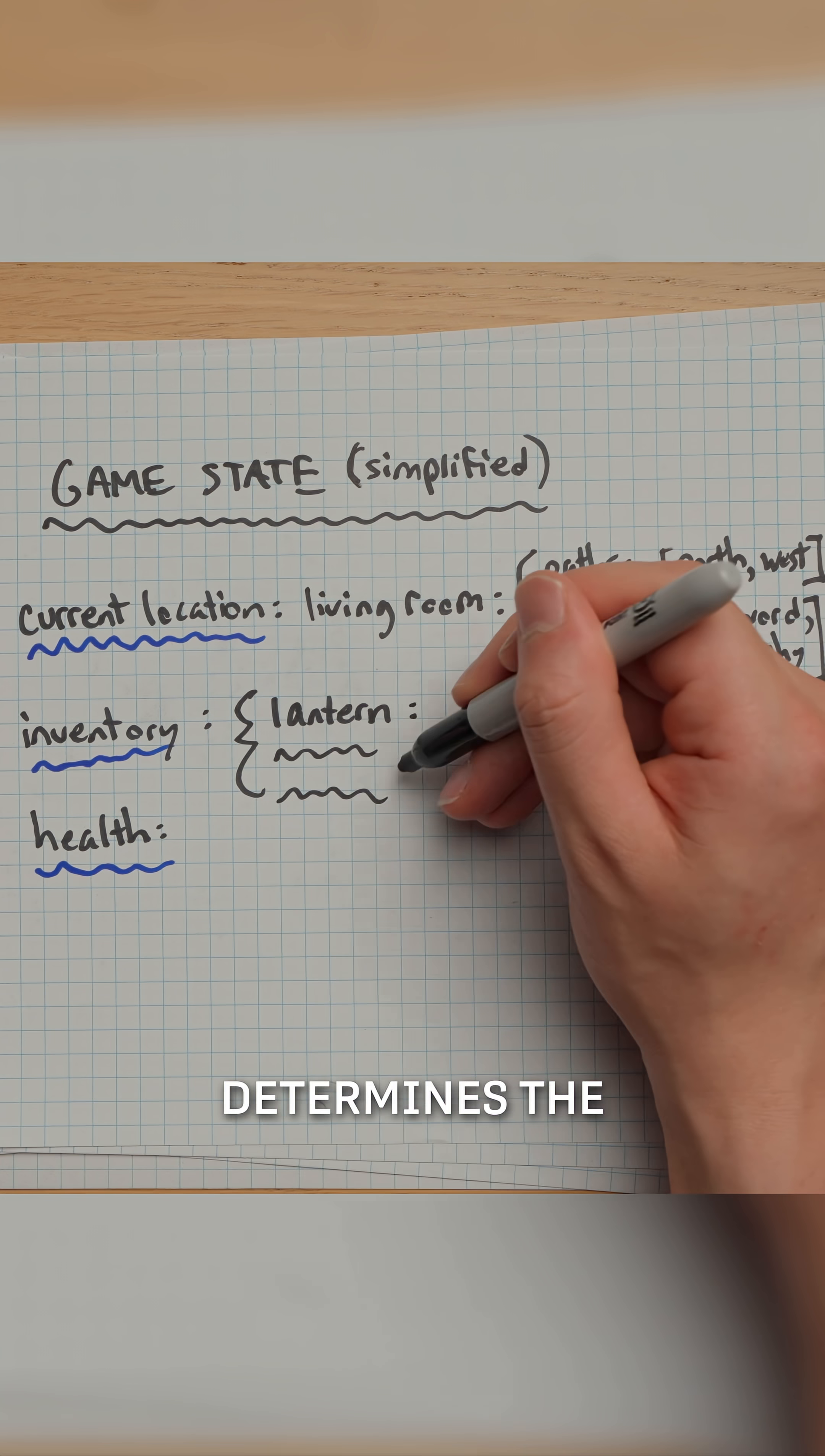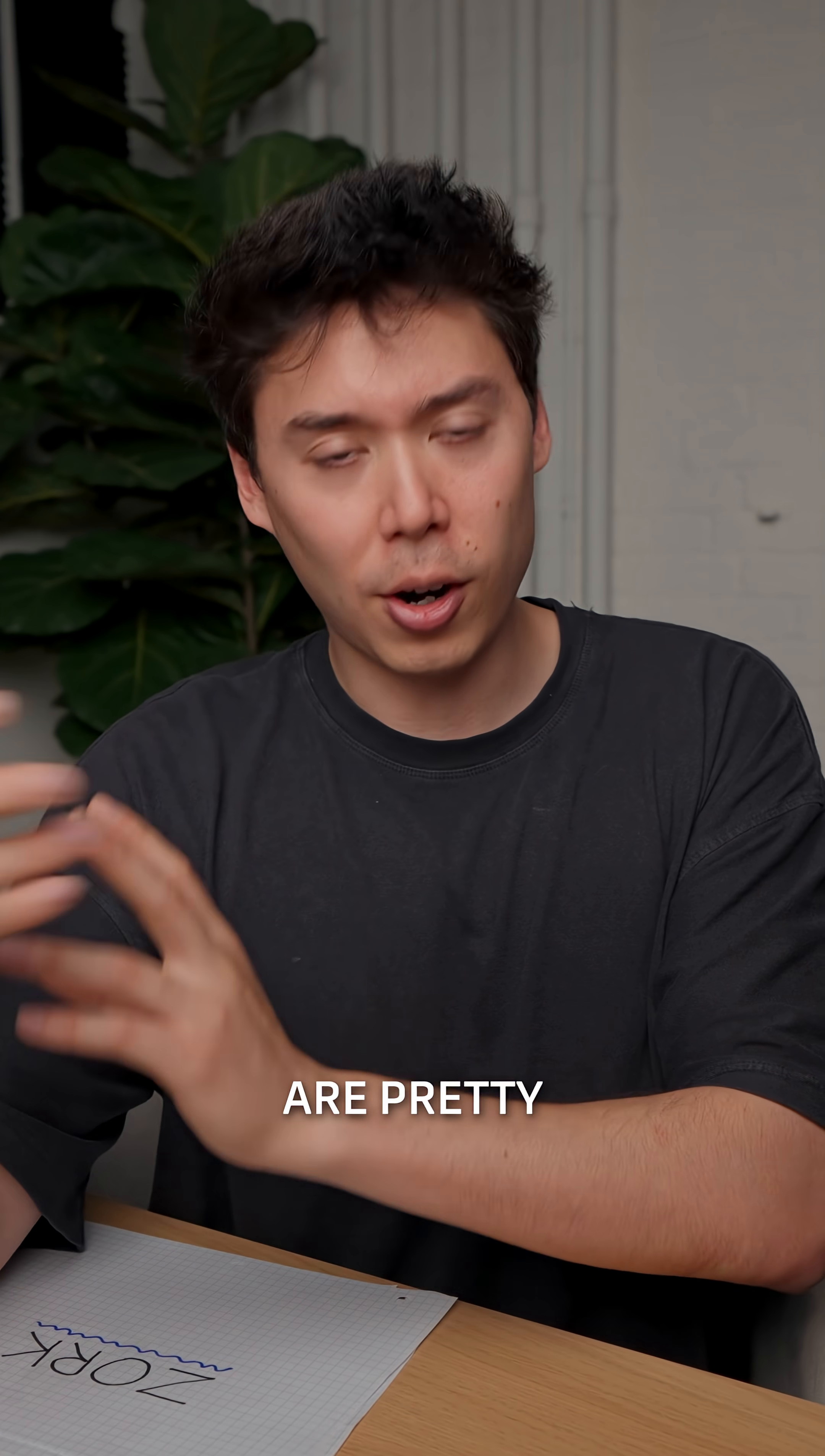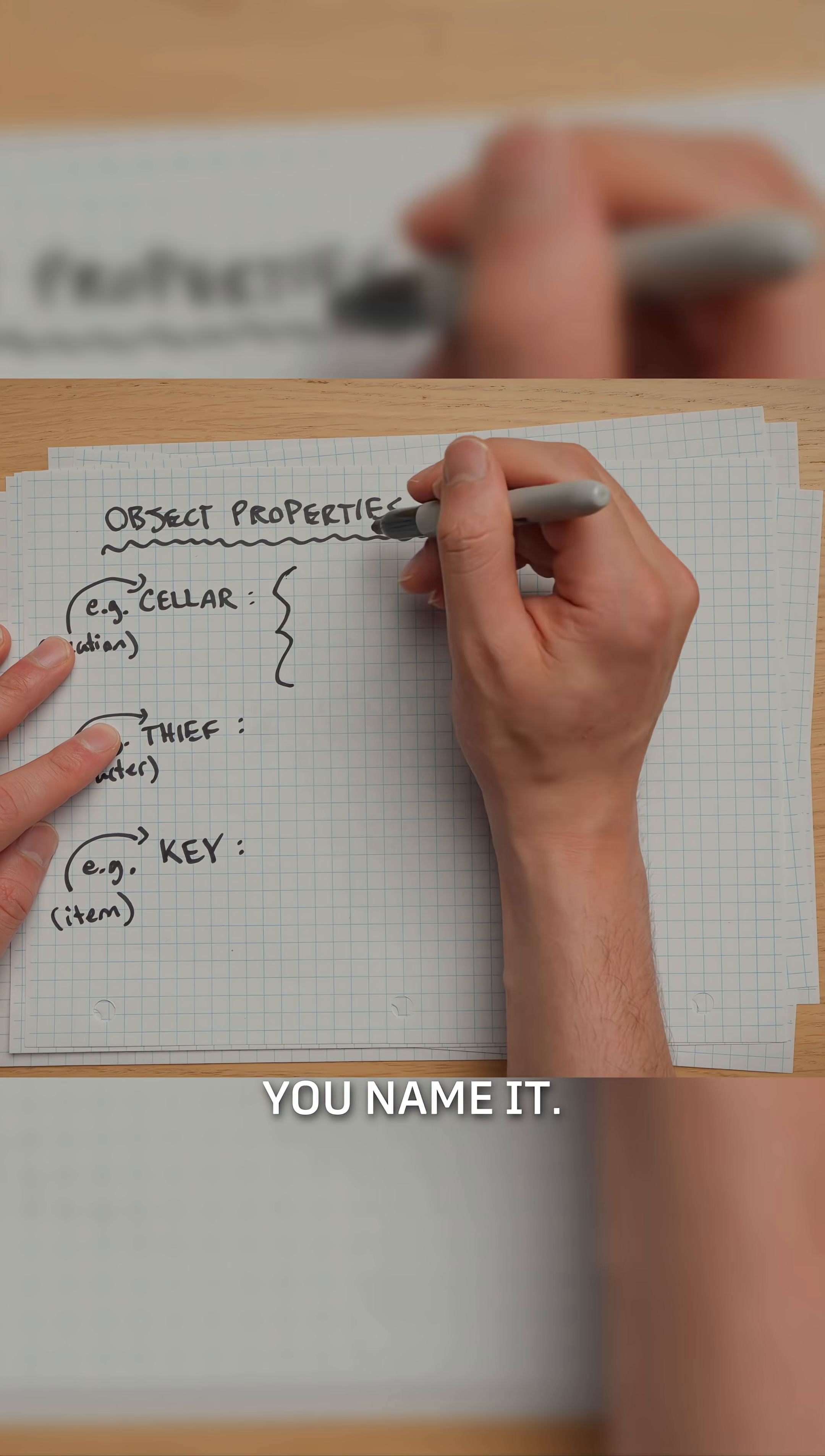This is what determines the kinds of objects and actions that you have access to. Object properties are pretty interesting. Every single thing in the Zork world is considered an object. Locations, characters, items, you name it.